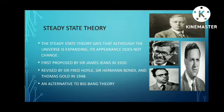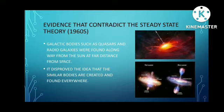The steady state theory was first proposed by Sir James Jeans in 1920 and revised by Sir Fred Hoyle, Sir Herman Bondi, and Thomas Gold in 1948. This is an alternative theory that opposes the big bang theory, and because it opposes the big bang, there are a variety of evidences that contradict it.